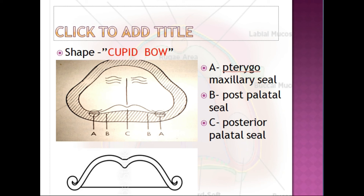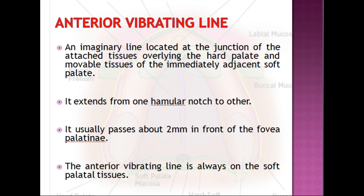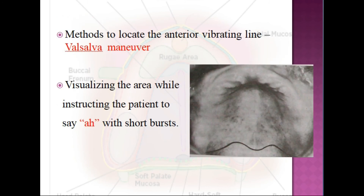The posterior palatal seal area lies between the anterior and posterior vibrating lines. The anterior vibrating line is an imaginary line located at the junction of the attached tissues overlying the hard palate and the mobile tissues of the immediately adjacent soft palate. It is recorded in the patient by performing the Valsalva maneuver and also by instructing the patient to say 'ah' in short, vigorous bursts. The anterior vibrating line is also on soft palatal tissues.